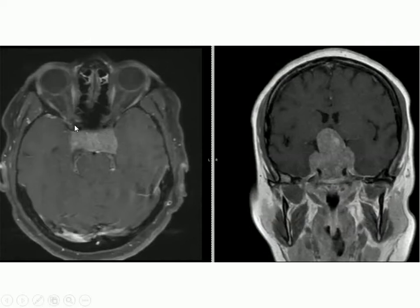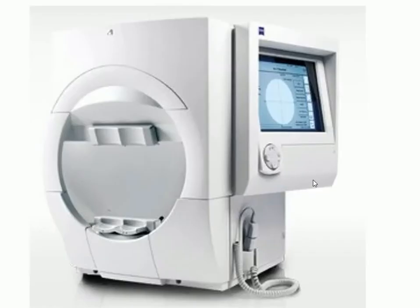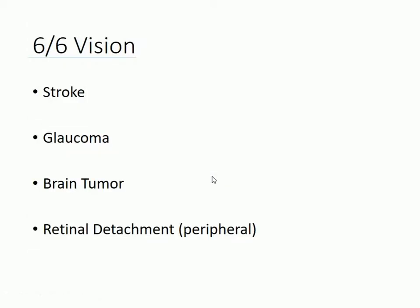She had a large tumor in her brain that was dramatically affecting her peripheral vision, and the way we discovered it was by checking her peripheral vision carefully with this automated test. A patient can have issues such as stroke, glaucoma, brain tumor, or retinal detachments in the periphery and still have 6/6 vision. These patients are easy to miss unless the examiner is careful to consider peripheral vision as well.